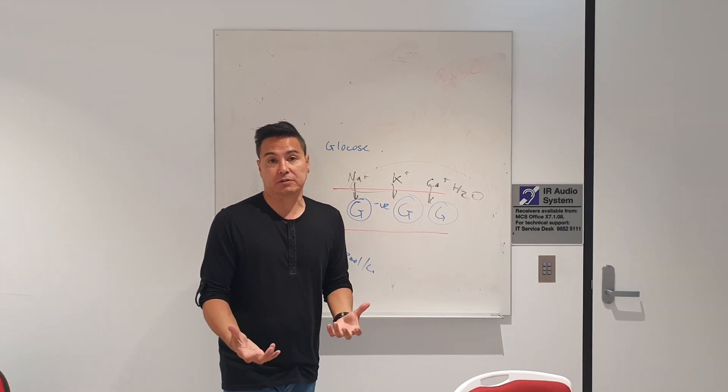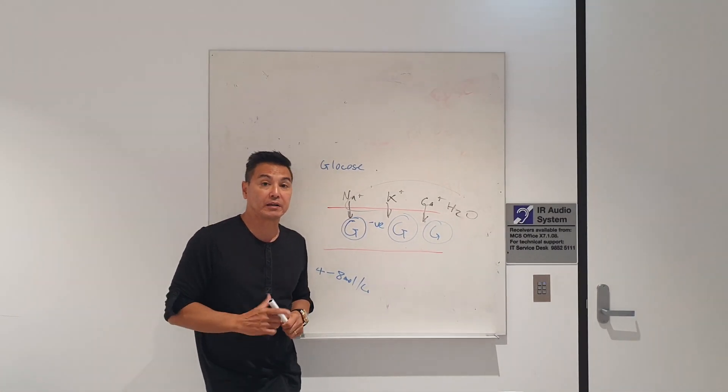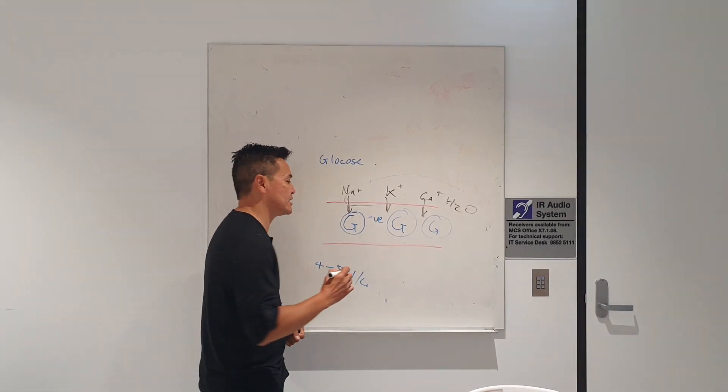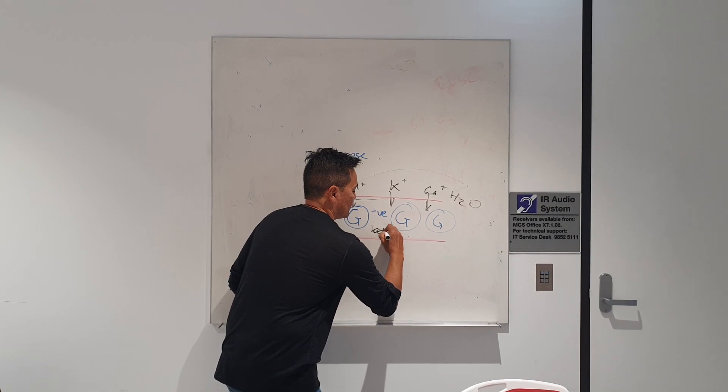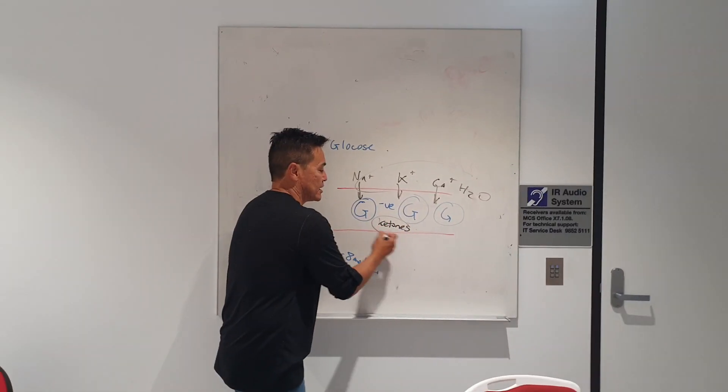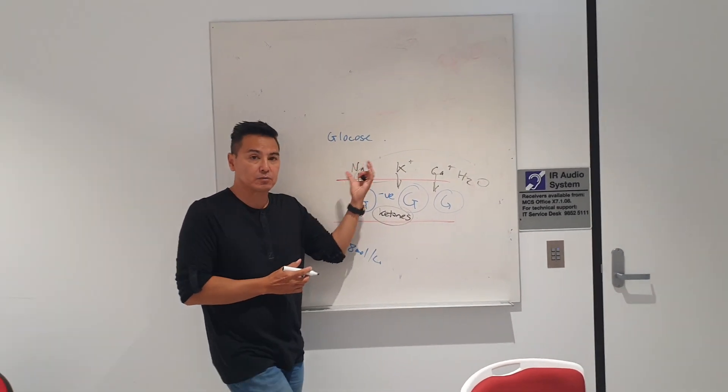Also, your body needs to continue to function, so what it does is it burns the next bioavailable compound, which is fat. A product of fat metabolism is ketones, and you would have heard of the ketone diet - they want to produce ketones because they know they're burning fat.